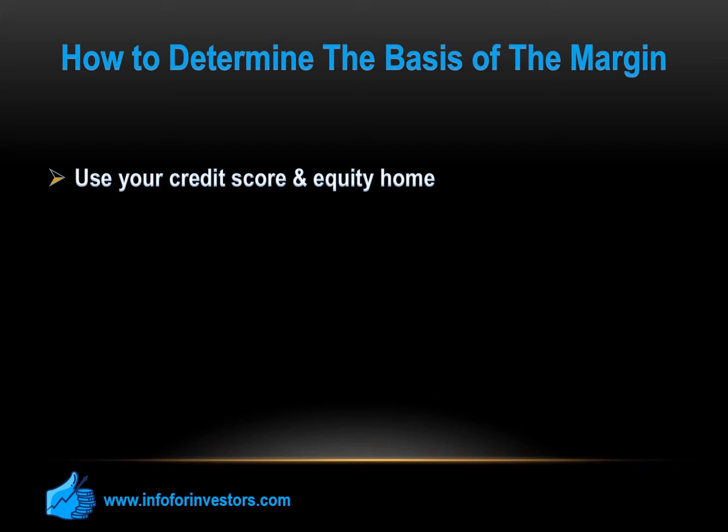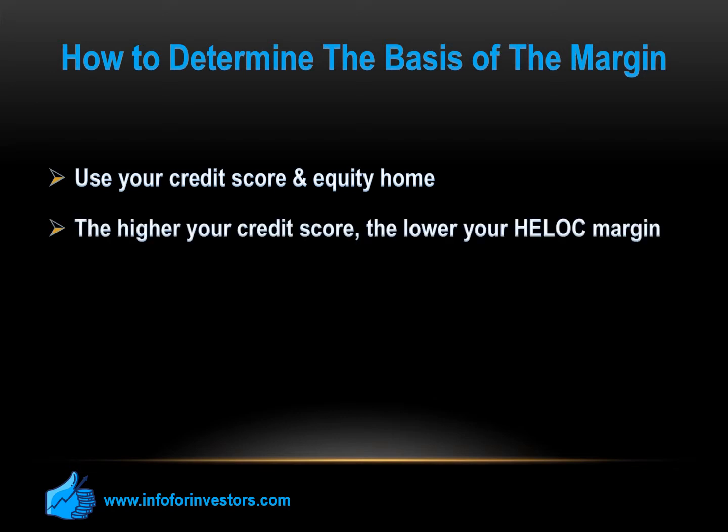Most lenders usually pick the average of the three scores, although the conservative ones might use the lowest of the three scores. The rule is: the higher your credit score, the lower your HELOC margin will be. Negative information such as late payments or credit problems can cause you to have a higher margin. In some cases, applicants lose their eligibility for a HELOC simply because of the severity of their derogatory credit history.